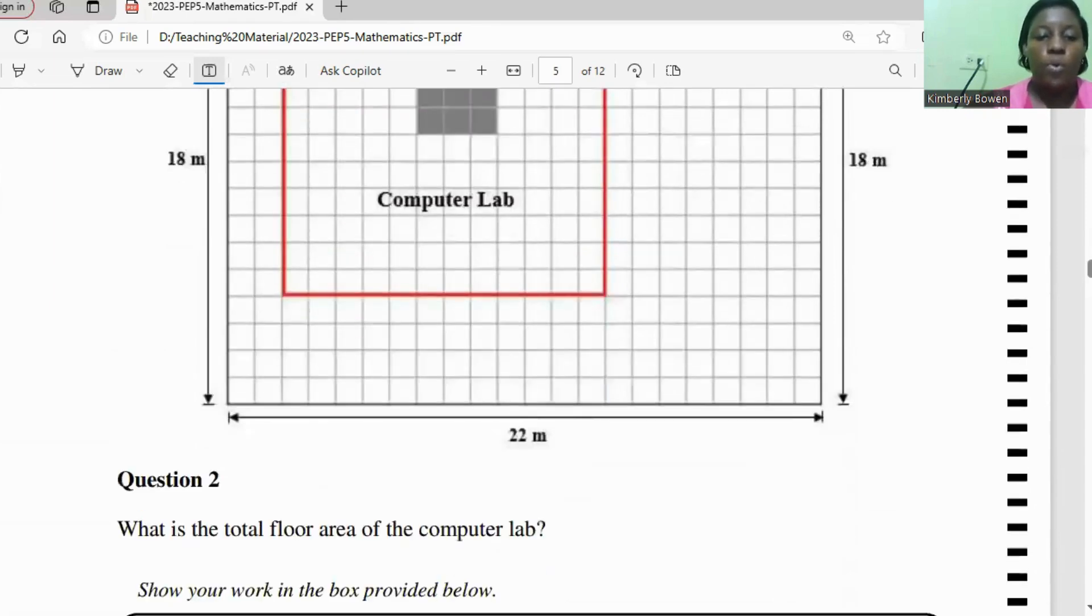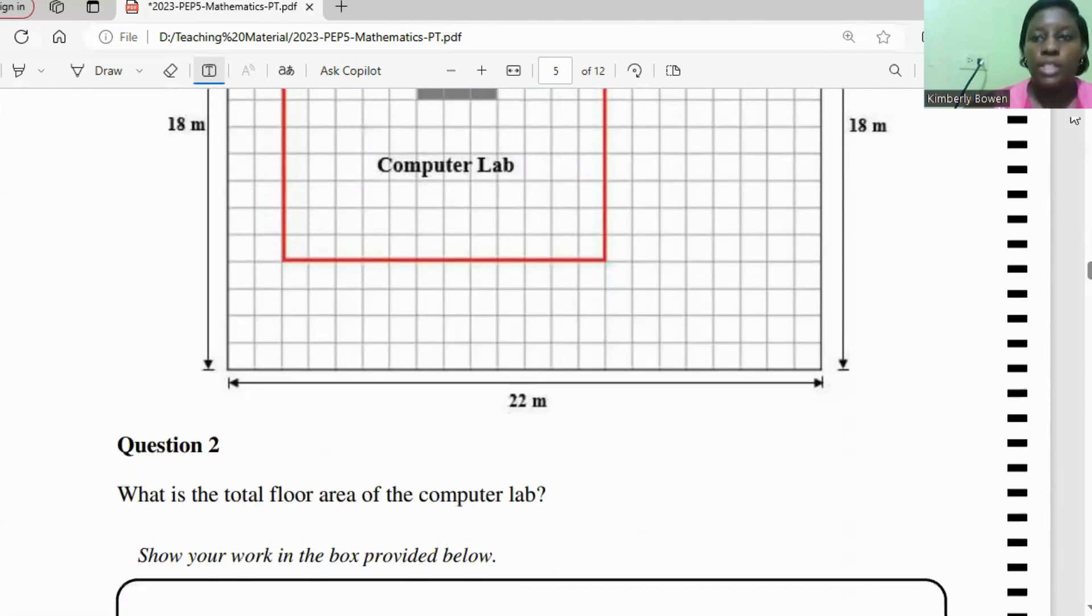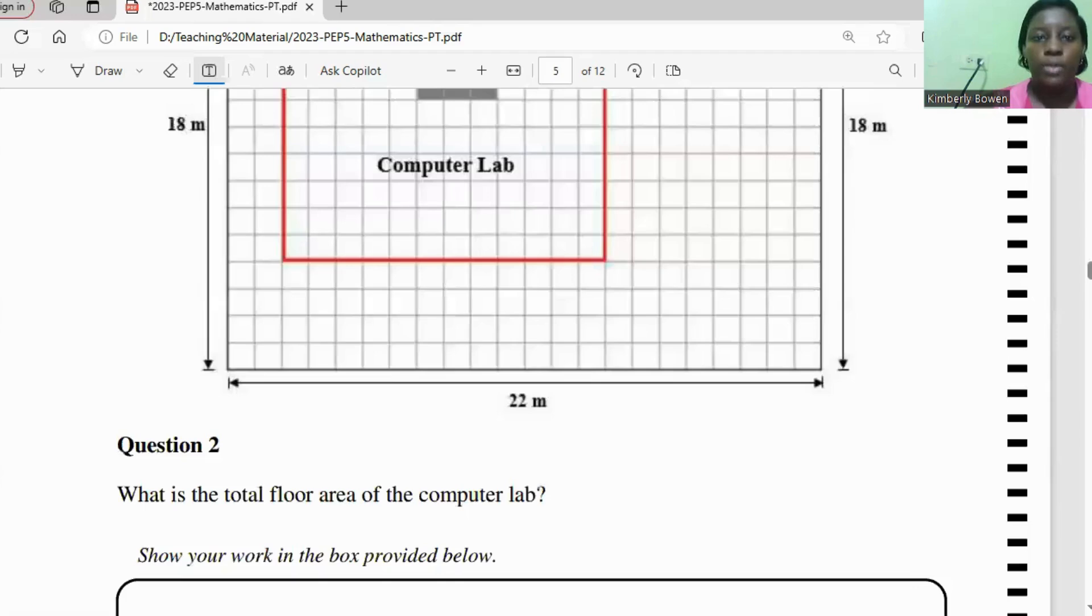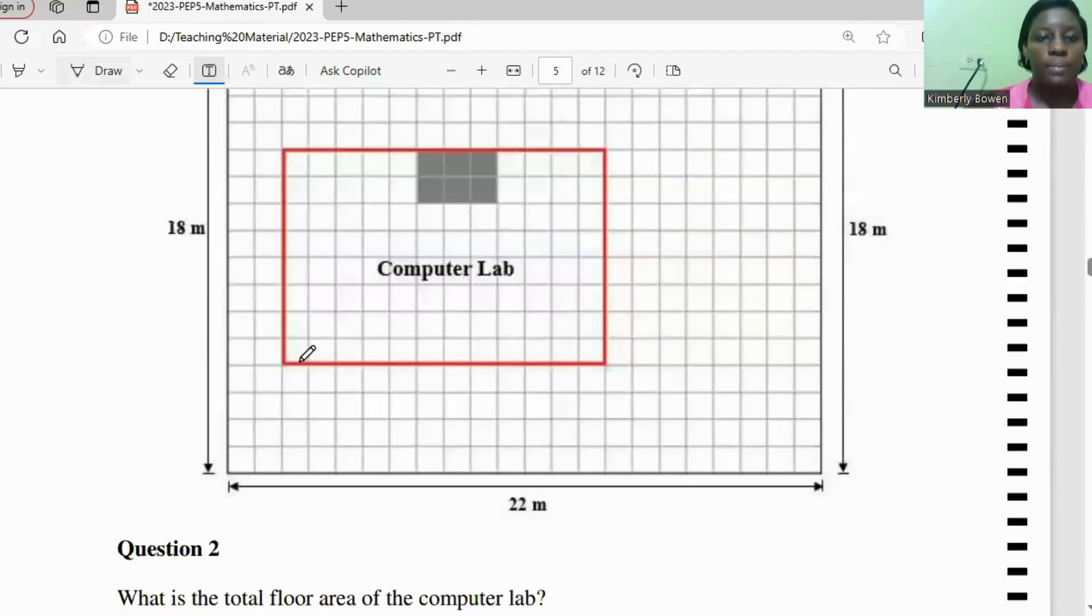Question two, what is the total area of the computer lab? So here's the computer lab and we can just count the squares. This is 1, 2, 3, 4, 5, 6, 7, 8, 9, 10, 11, 12. So this is 12 meters. And 1, 2, 3, 4, 5, 6, 7, 8, 8 meters.